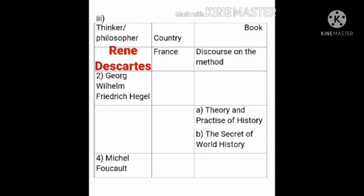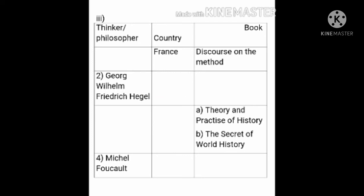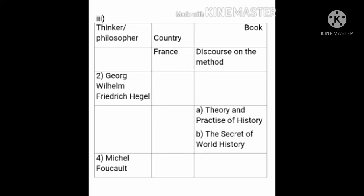The second philosopher's name is given: George Wilhelm Friedrich Hegel. He belongs to Germany, and the books written by him are Reason in History and Encyclopedia of Philosophical Science. The third one has book names given: Theory and Practice of History and The Secret of World History. These two books were written by Leopold von Ranke, and he belongs to Germany.